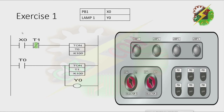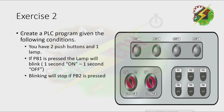Now let's go to exercise 2. Create a PLC program given the following condition. You have two push buttons and one lamp. If PB1 is pressed, the lamp will blink — one second on, one second off. Blinking will stop if PB2 is pressed. Let's have our demonstration.